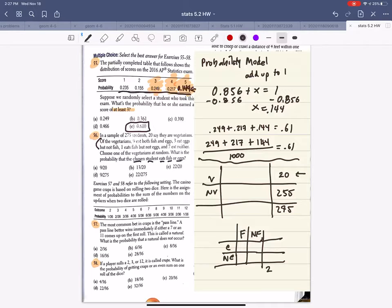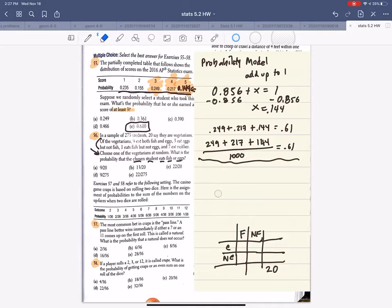So of these 20, right? It says choose one of the vegetarians at random. So in essence, I don't really need this table. I really only need this table because I'm only choosing from that 20 because I'm choosing one of the vegetarians at random.